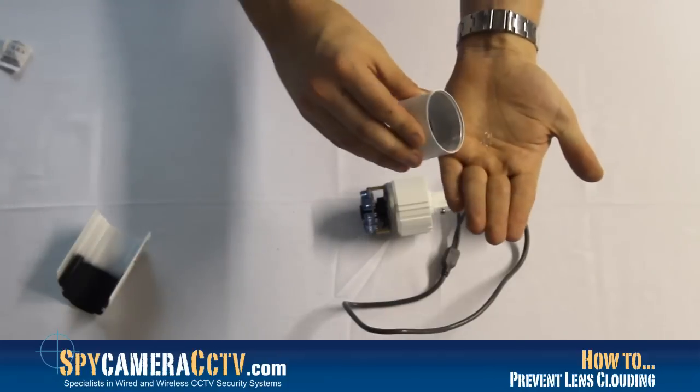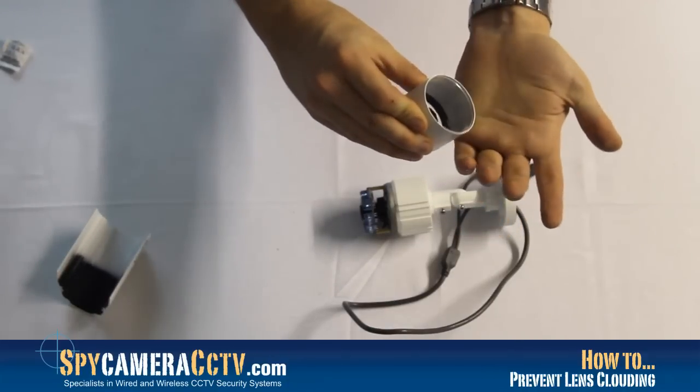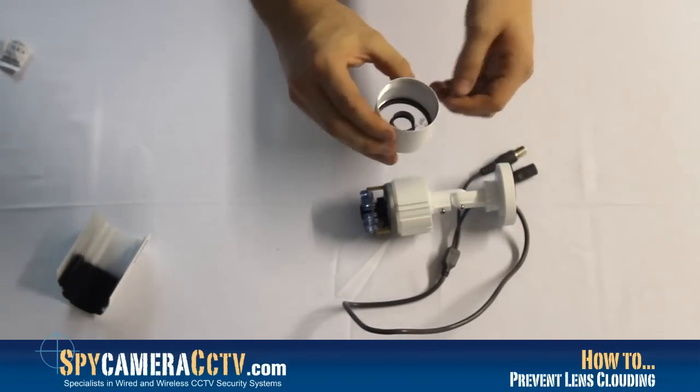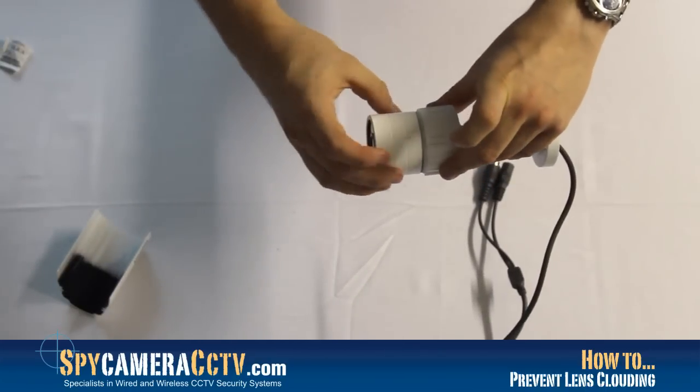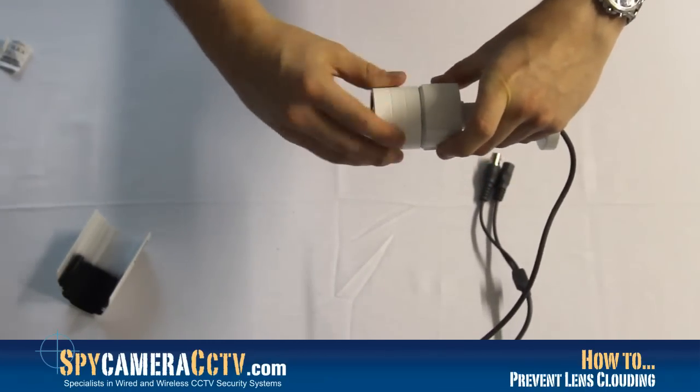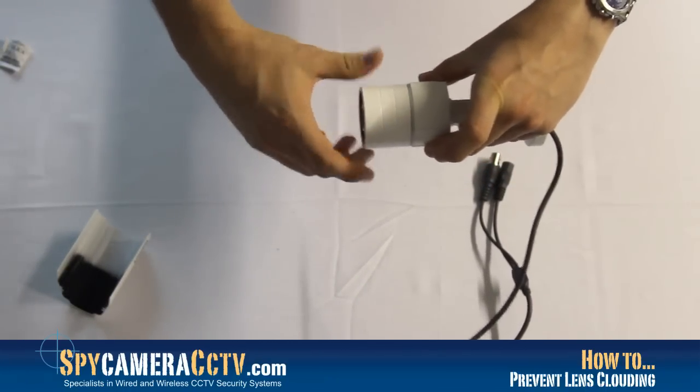And all you need to do is just pop these into the lens. This won't cause any damage to the camera. What it will help do is in the mornings, in the afternoons, the temperature changes just help absorb any extra moisture you may get in your camera.